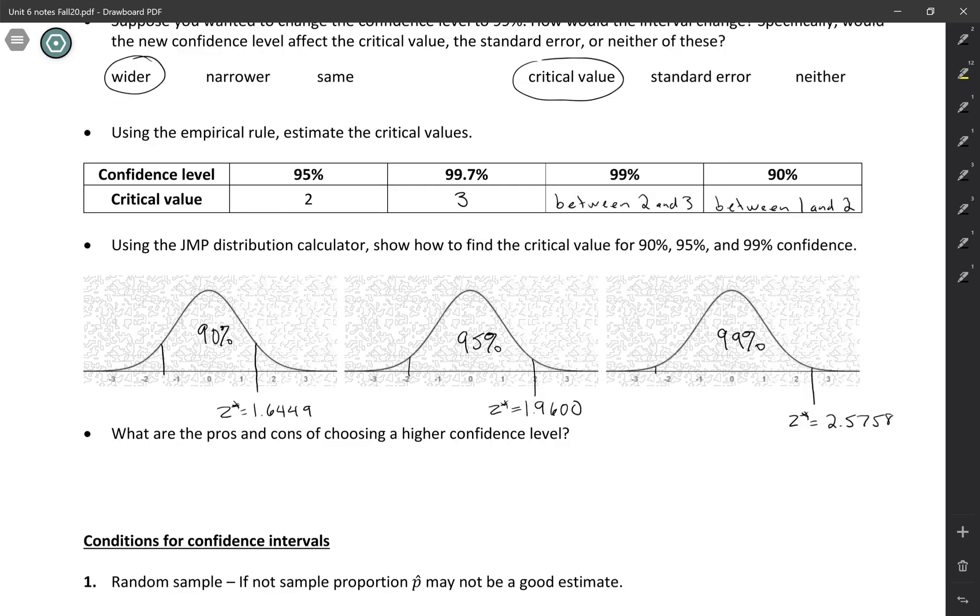So why do we have three different confidence levels? And really we could have even more than this. We could have confidence levels in between. These are just some common ones. It's because different confidence levels have different pros and cons.